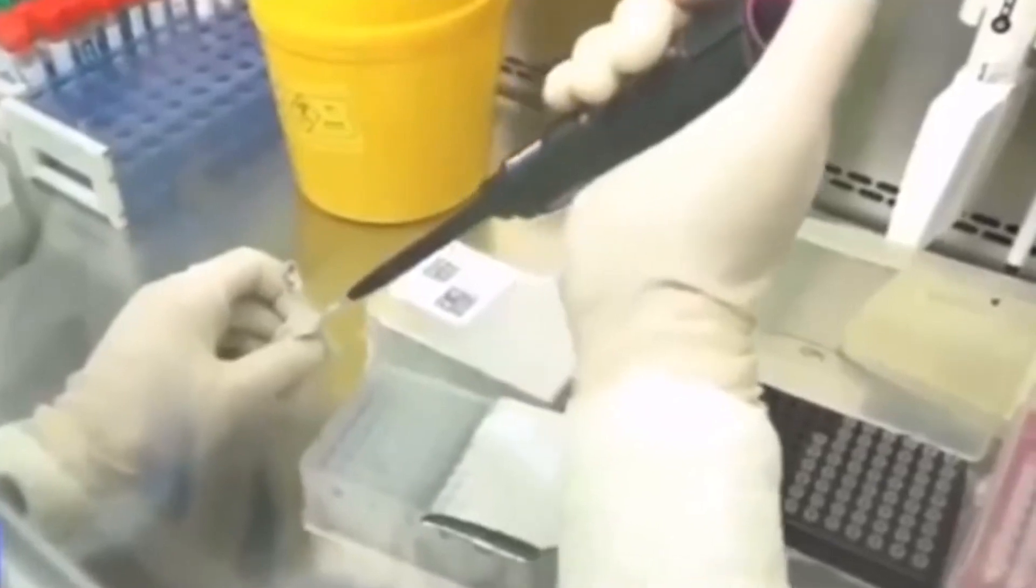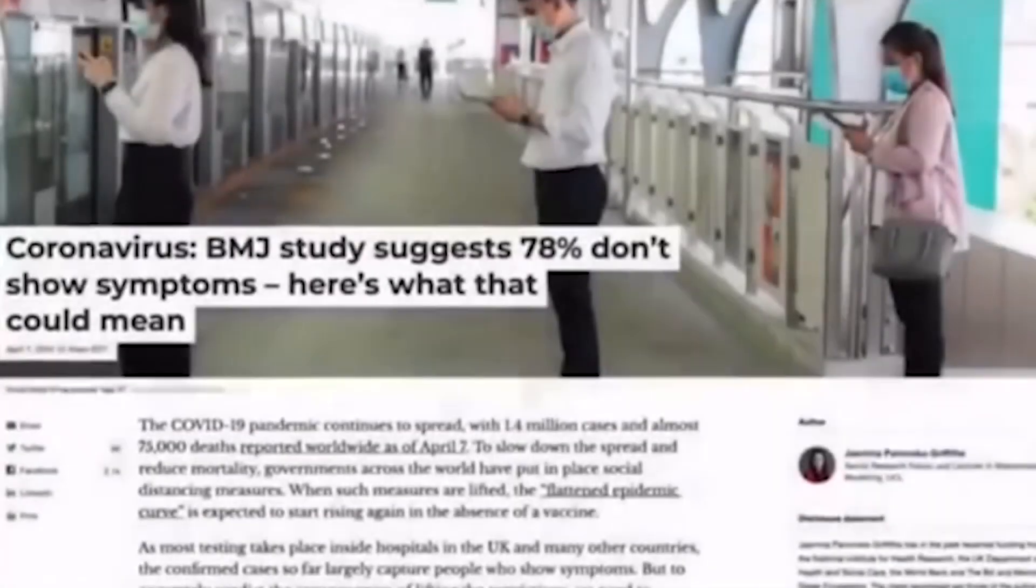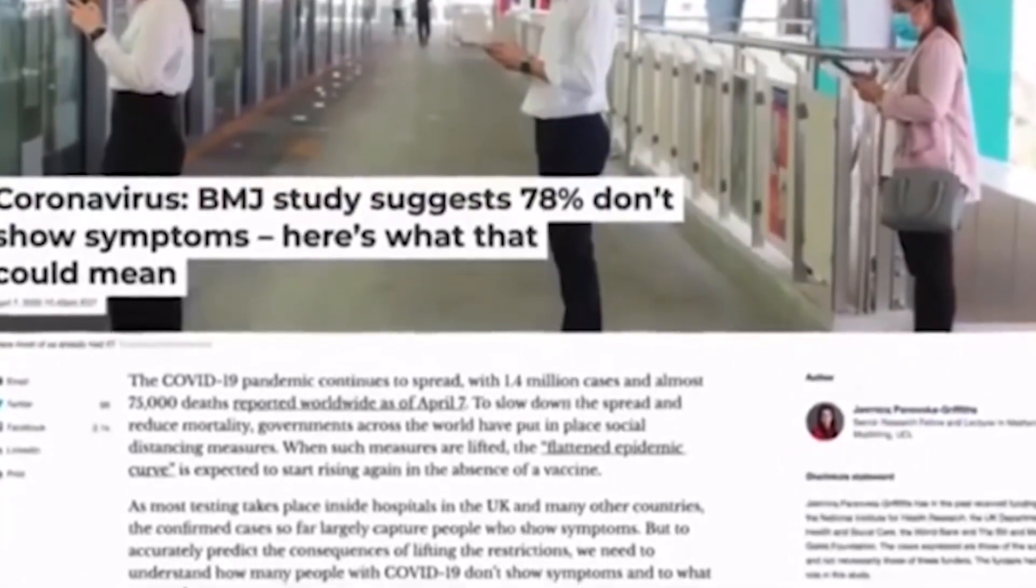What about the high levels of people testing positive who don't get sick? In fact, 80% of people testing positive are either asymptomatic or have slight cold symptoms. Why? This would make sense in exosome theory, since the RNA fragments are not the cause of the illness. But it would not make sense for virus theory, where this virus is supposed to cause the illness.